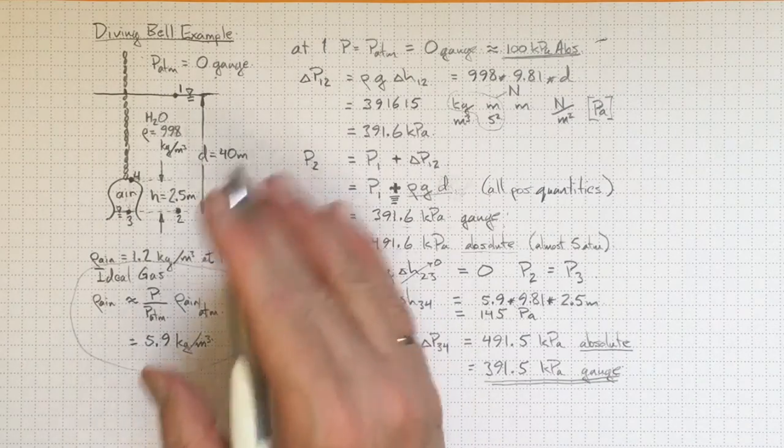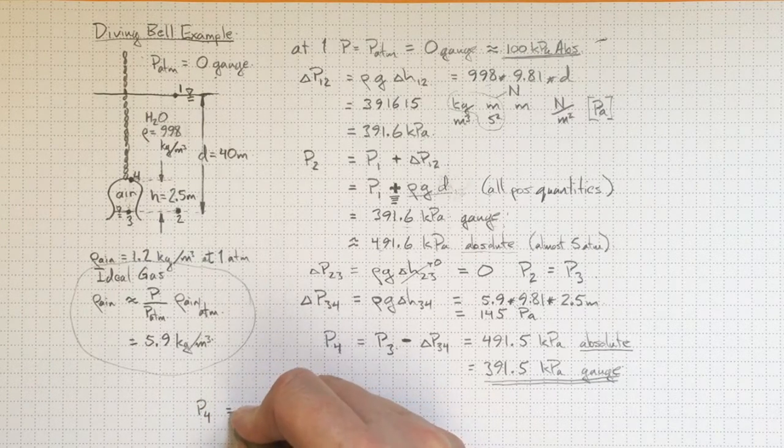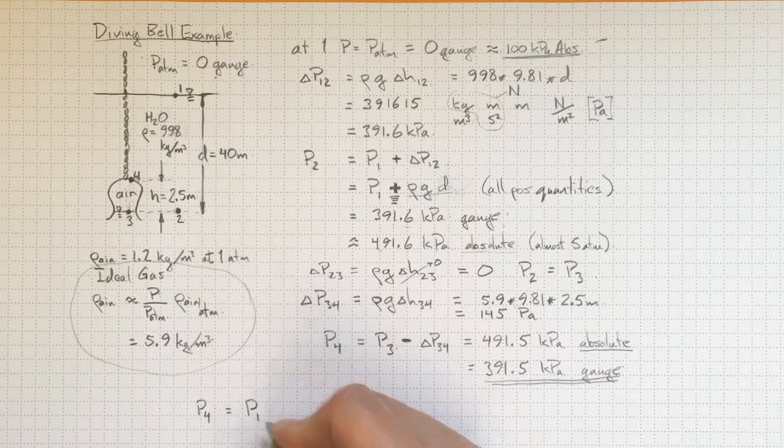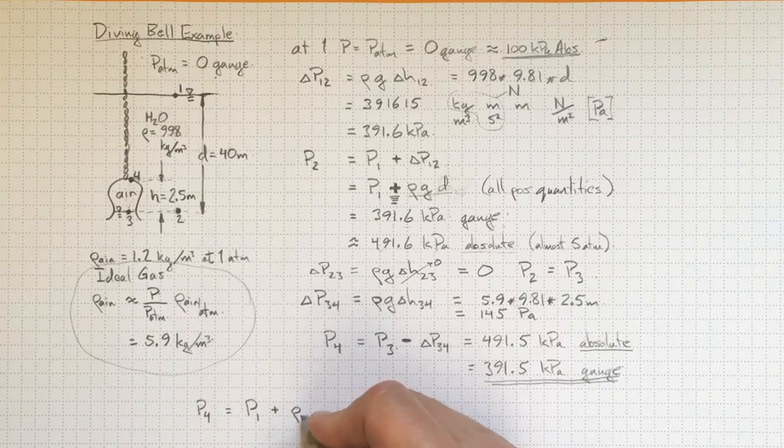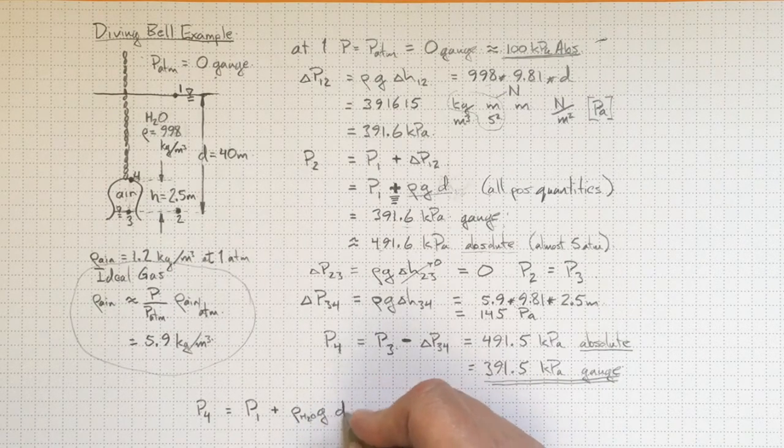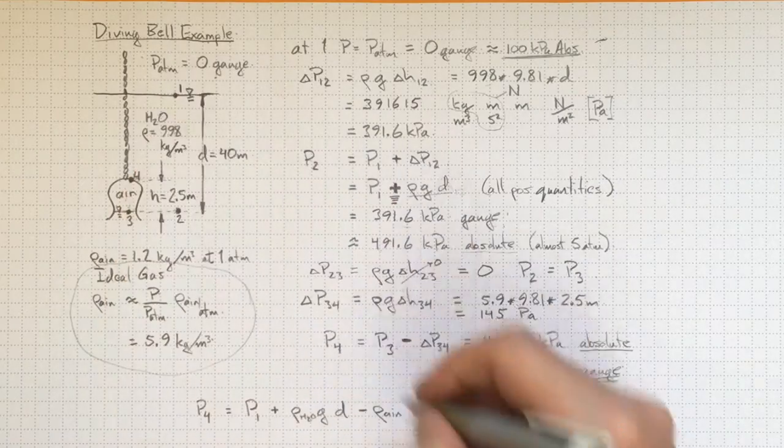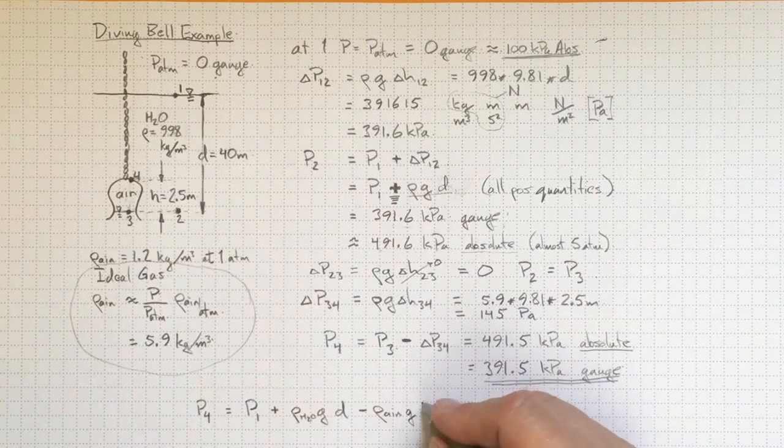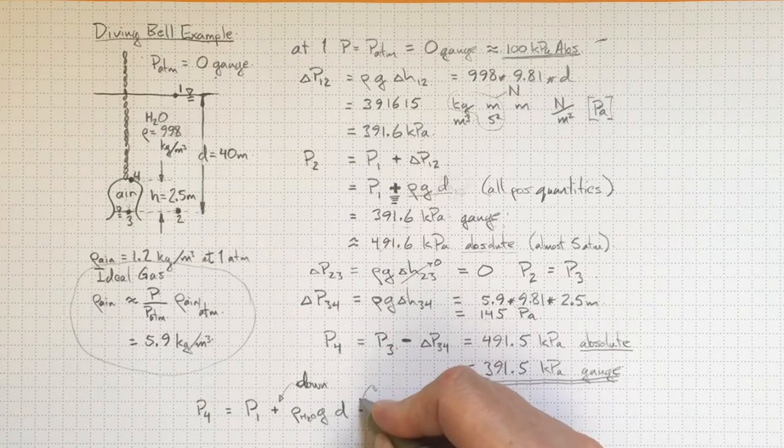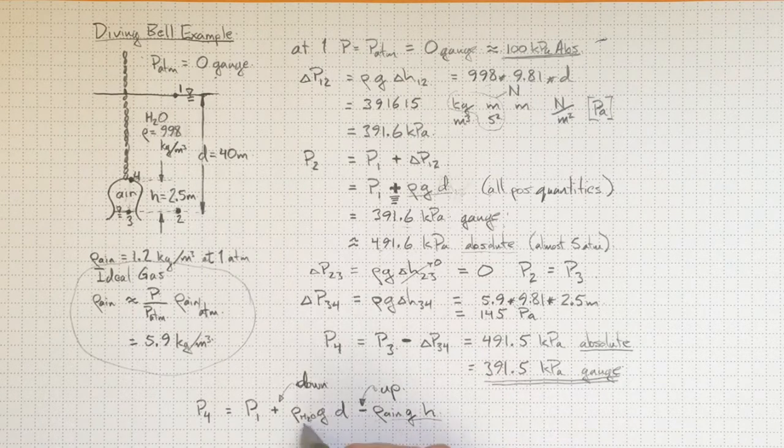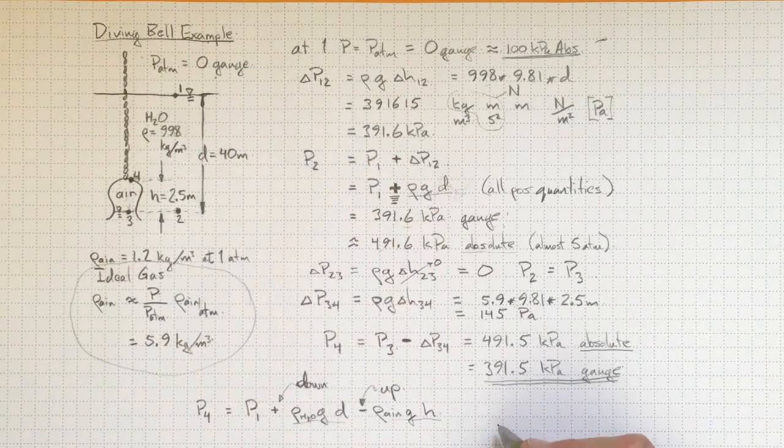Now if I wanted to get there a little faster, I could start and say well I really want to know what the pressure is at location 4. Well it'll be the pressure at location 1 plus the increase in pressure as we go down, rho of the water times g times the distance we went down, minus rho of the air going from 3 up to 4 times g times h up from 3 to 4. That's going down, that's going up in elevation. And then we can make all of these numbers here positive and still make sure that we get the right answer and we can pick out exactly what's going on from looking at the diagram.